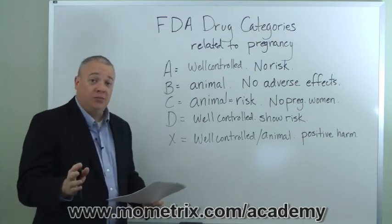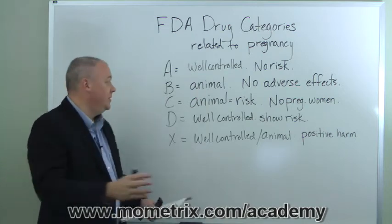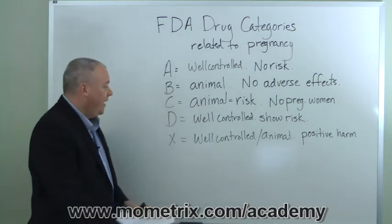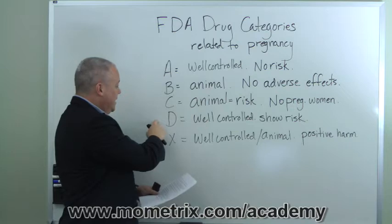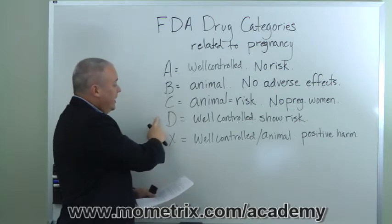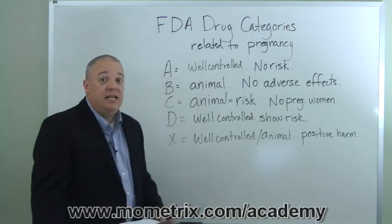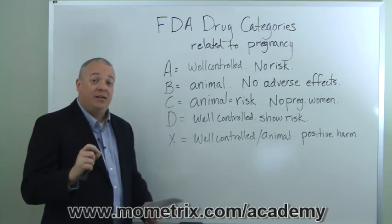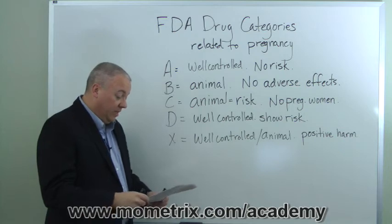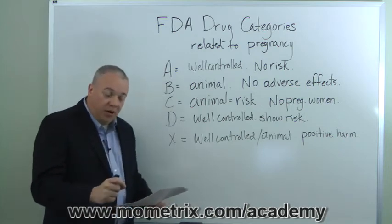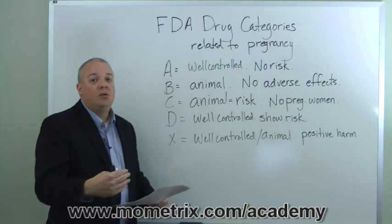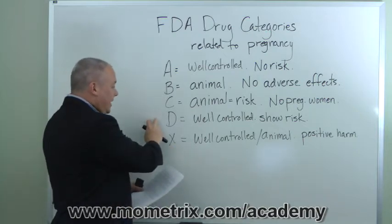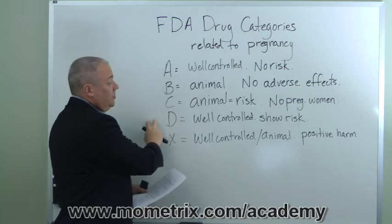Also, drugs that have no clinical trials whatsoever — for animals or humans — would fall into Category C as well. Category D includes well-controlled studies on pregnant women that show an elevated risk factor for the unborn baby. So well-controlled studies on pregnant women that do show risk to the unborn baby, and possibly to the pregnant woman, have indicated that there is risk to the unborn child.